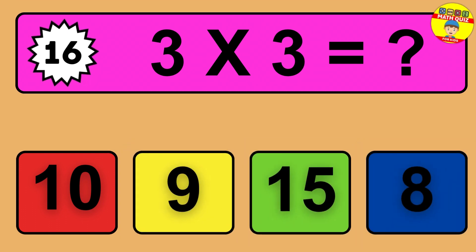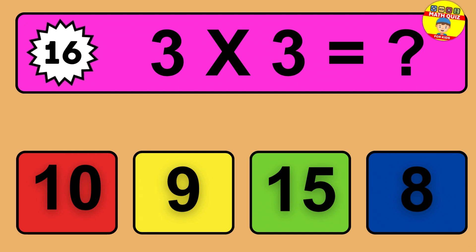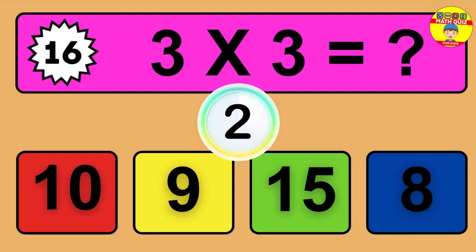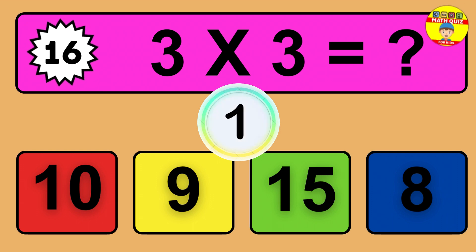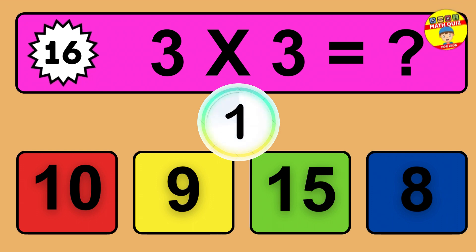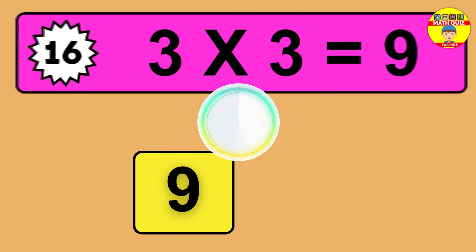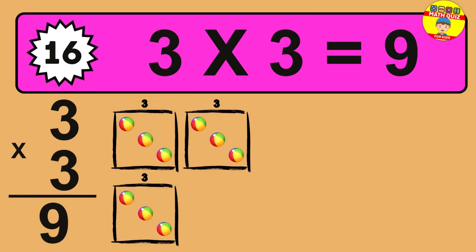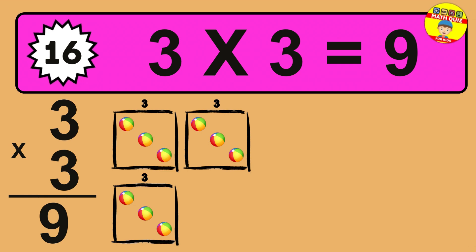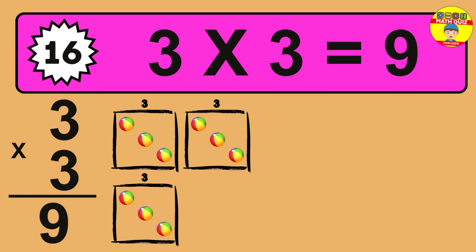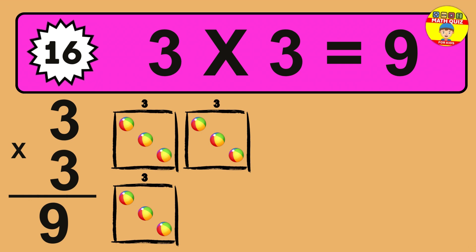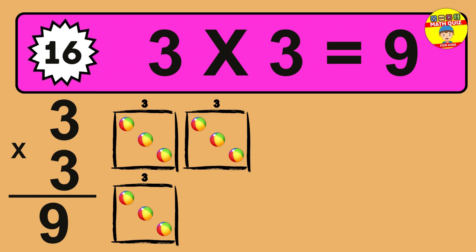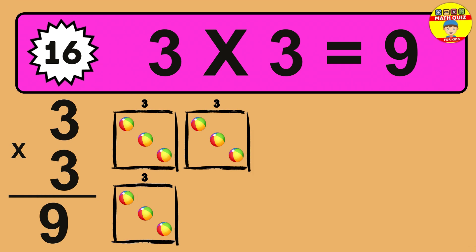Question 16. 3 times 3 equals what? The answer is 3 times 3 is 9. To calculate, we have 3 groups with 3 balls each one. So how many balls do we have? 9 balls.